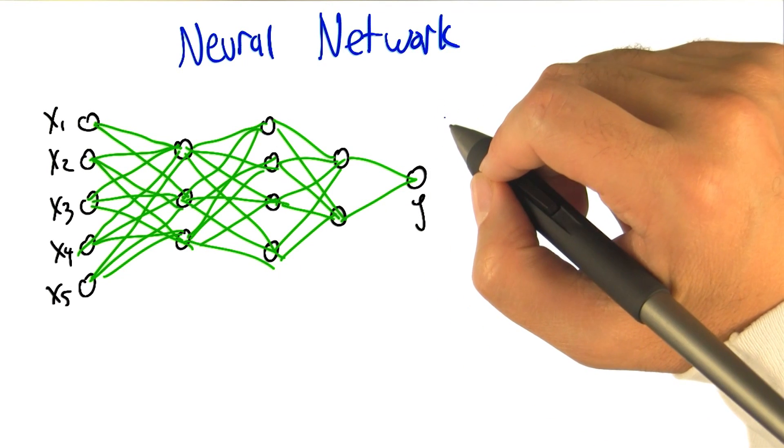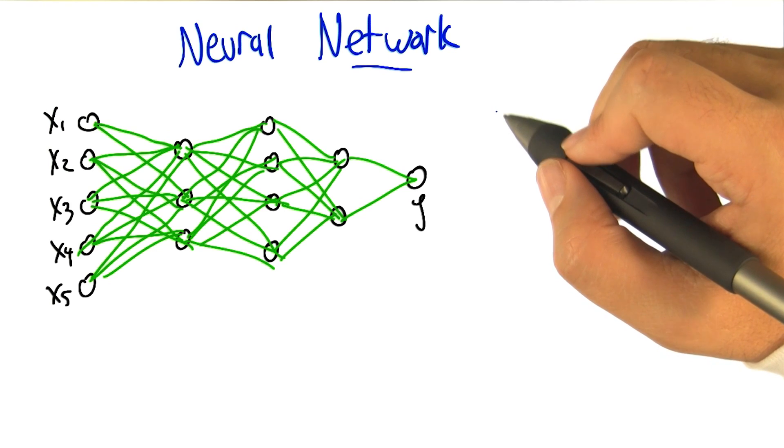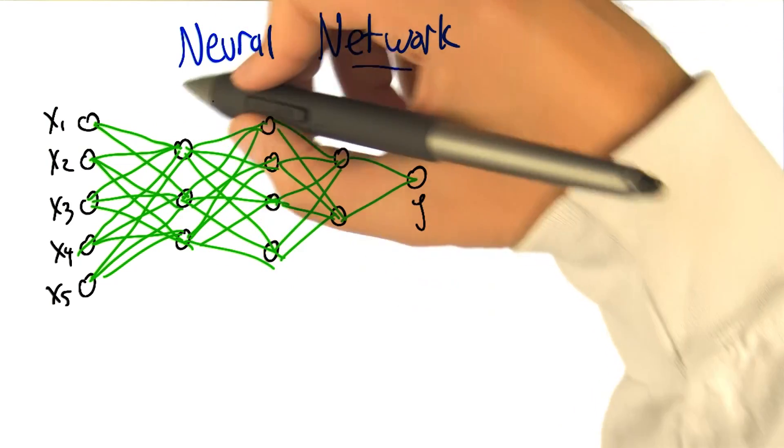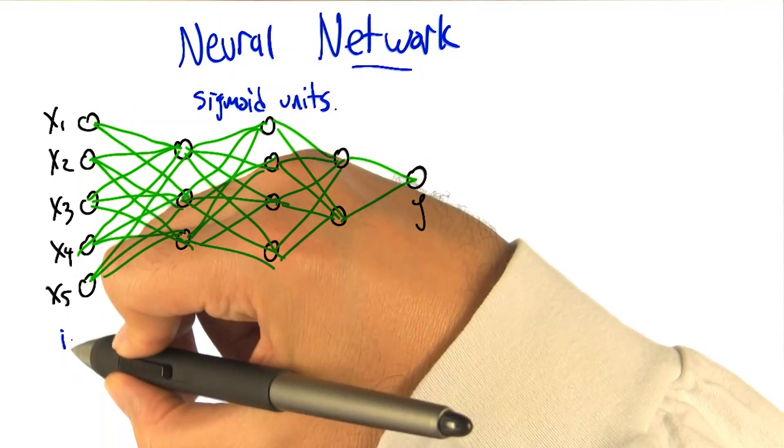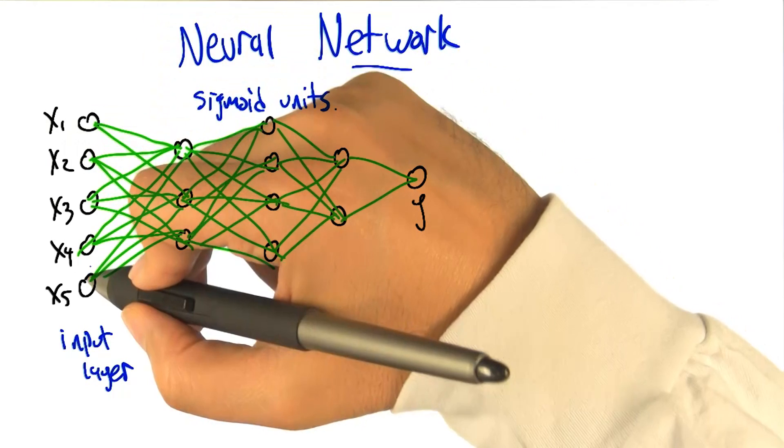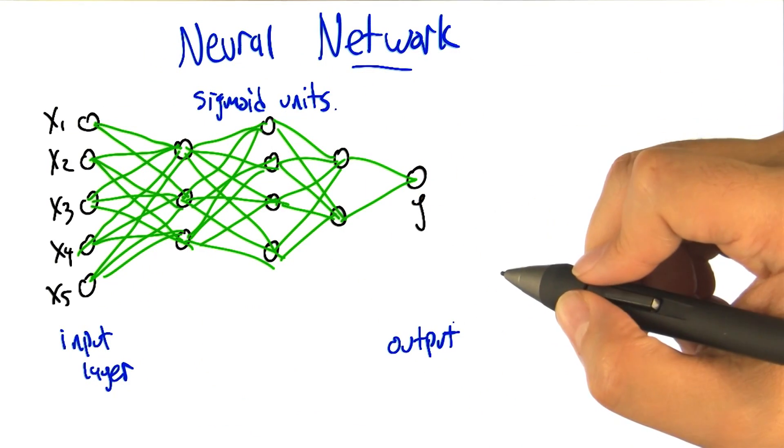All right, so we're now in a great position to talk about what the network part of the neural network is about. The idea is that we can construct, using exactly these kinds of sigmoid units, a chain of relationships between the input layer, which are the different components of X, with the output Y.